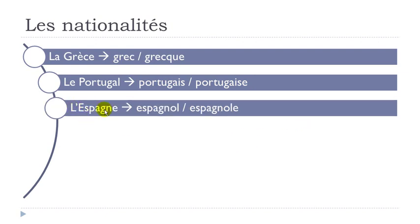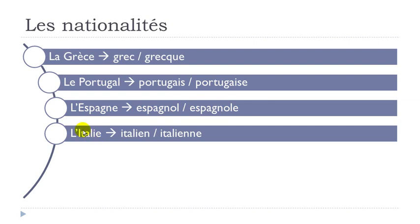L'Espagne — espagnol, espagnole. You get this final E for the feminine form but phonetically it's the same. L'Italie — italien, italienne. Remember, when you get this E followed by a double consonant like here, you will have to open it: italienne.